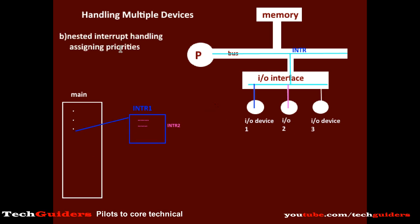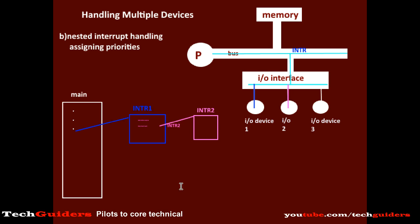Hence, the other approach is based on assigning priorities to the requests, which leads to nested interrupt handling. Here, the requests are assigned priorities, and a low priority request is always allowed to be interrupted by a high priority request. For example, while handling the interrupt request for device 1, suppose we receive a high priority request from I/O device 2 — in that case, the routine for device 1 will be suspended for the time being, and the interrupt routine for device 2 will be executed.